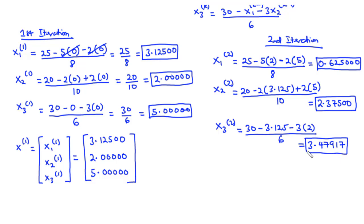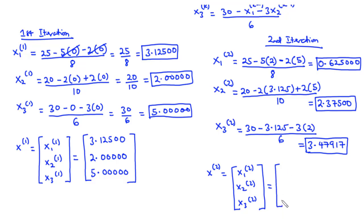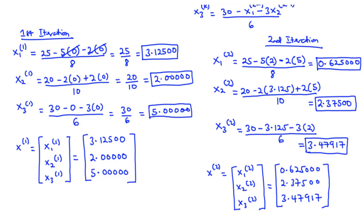So at the end of the second iteration step, we have x(2) = [x1(2), x2(2), x3(2)] = [0.62500, 2.37500, 3.47917]. These are the values that represent the approximation to the exact solution after two iterations.